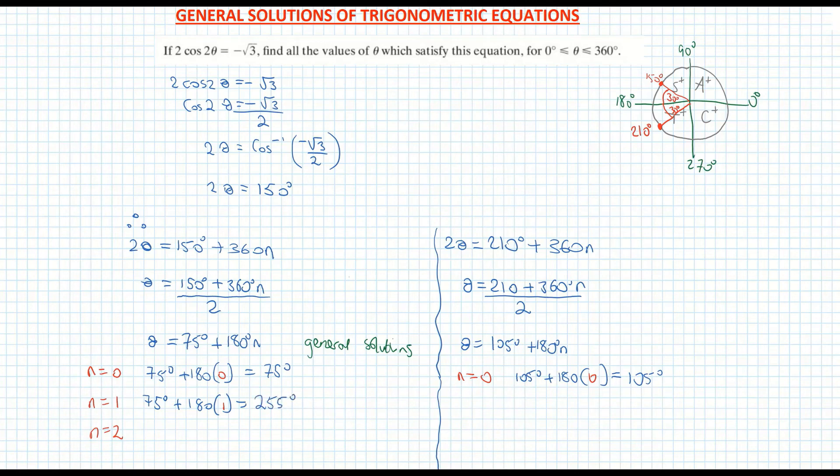And I'm going to come over now and do my n is equal to one for my second general solution, which is 105 degrees plus 180 times one. And that is 180 plus 105, which is 285.